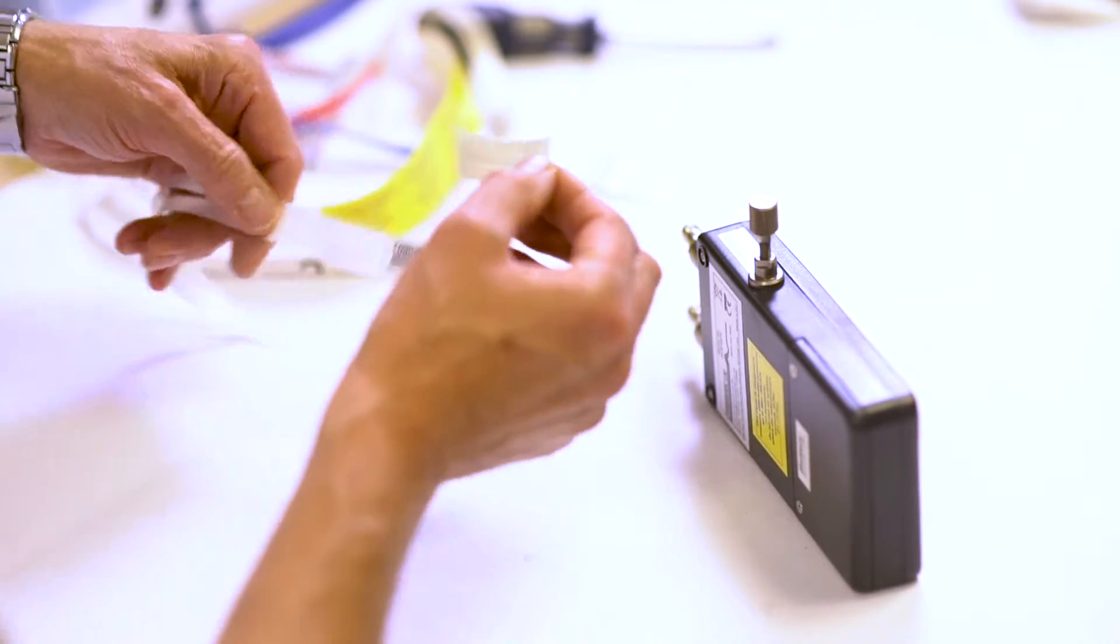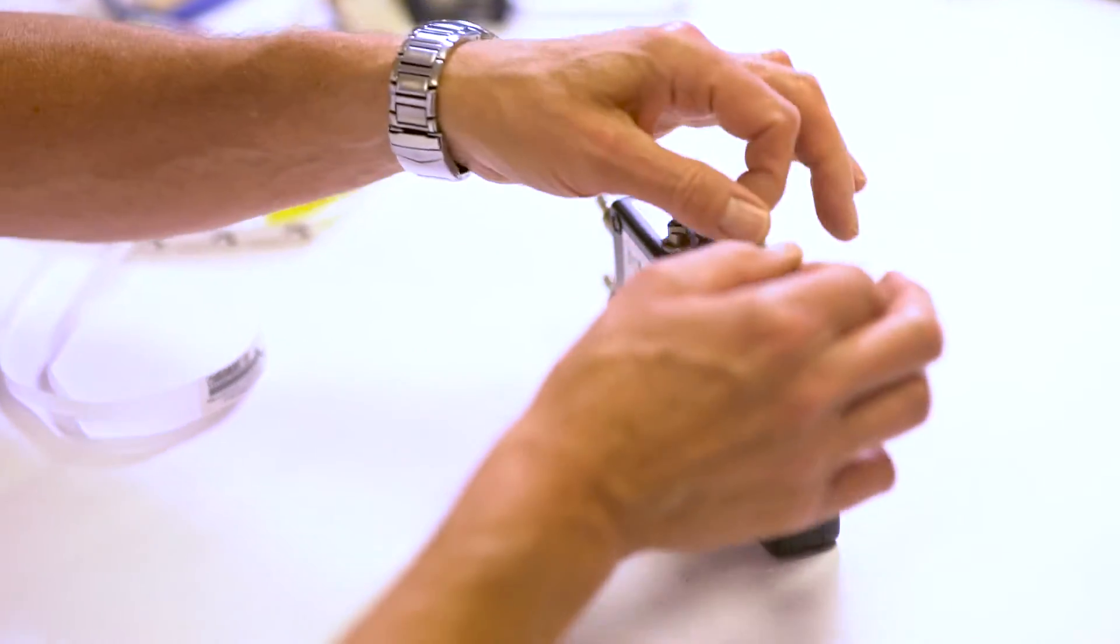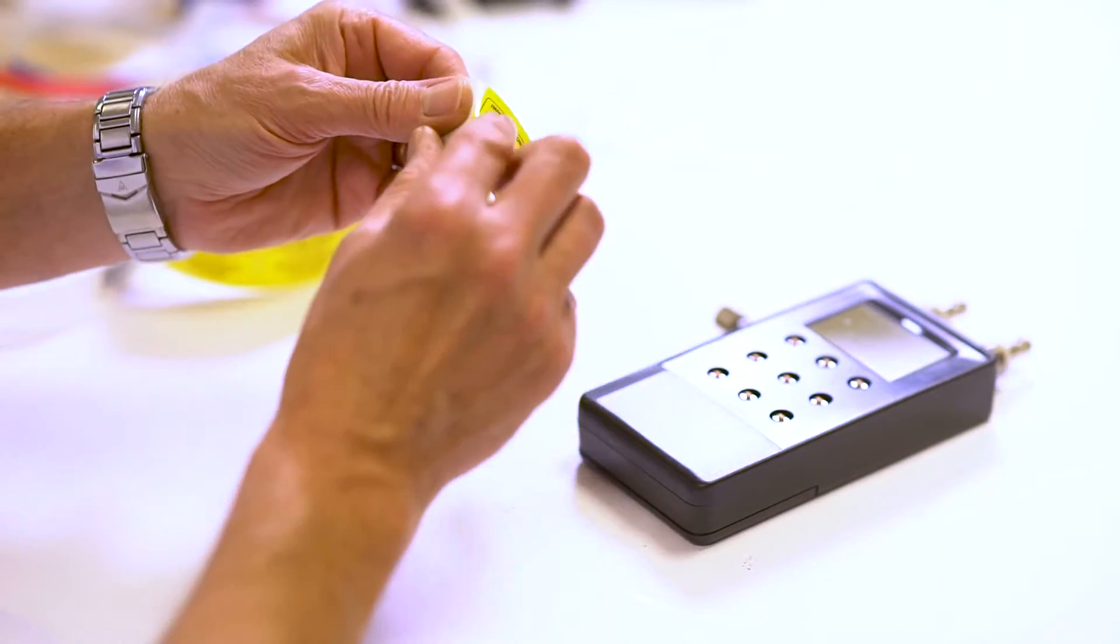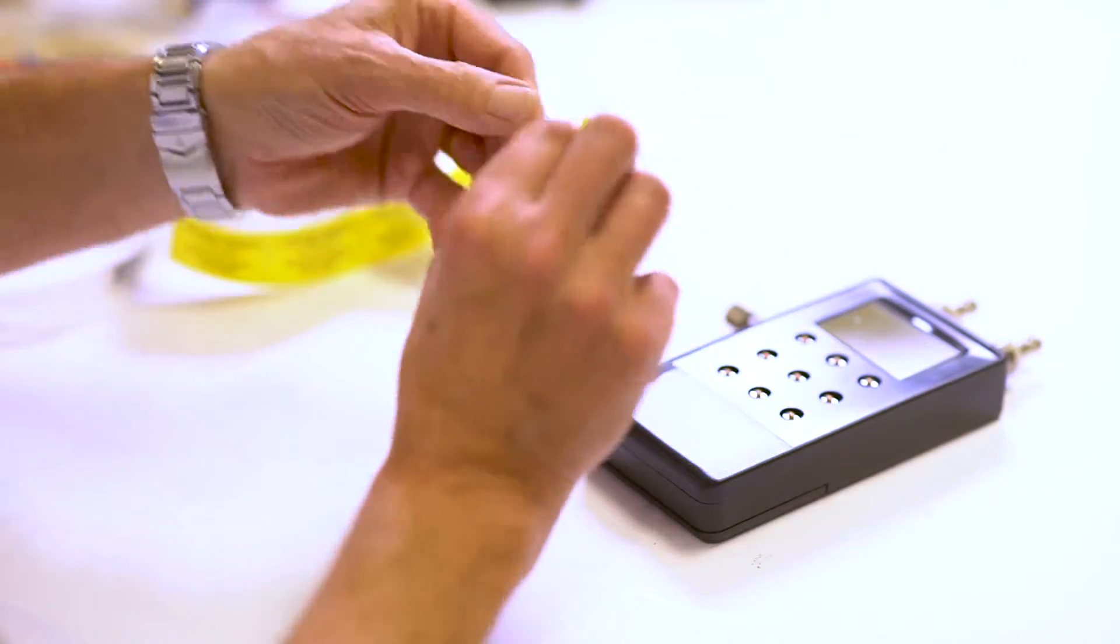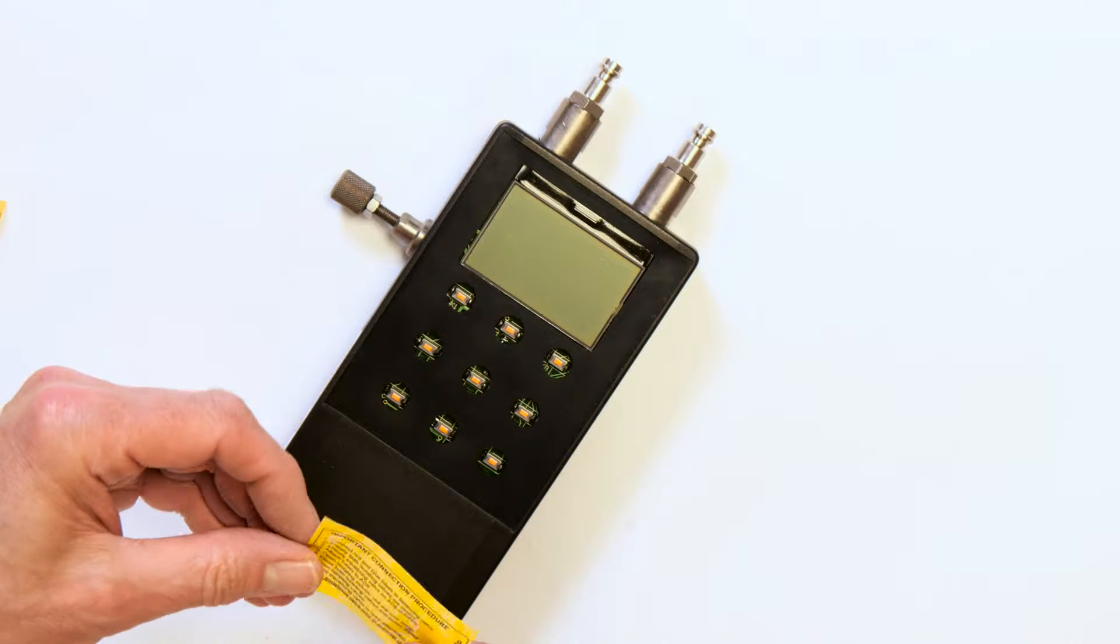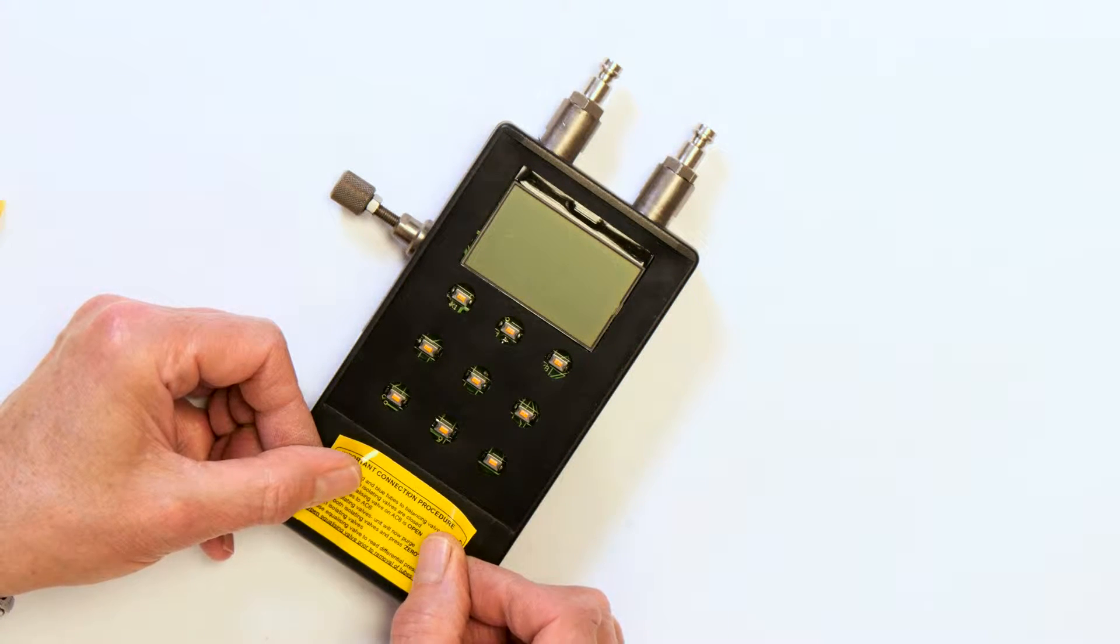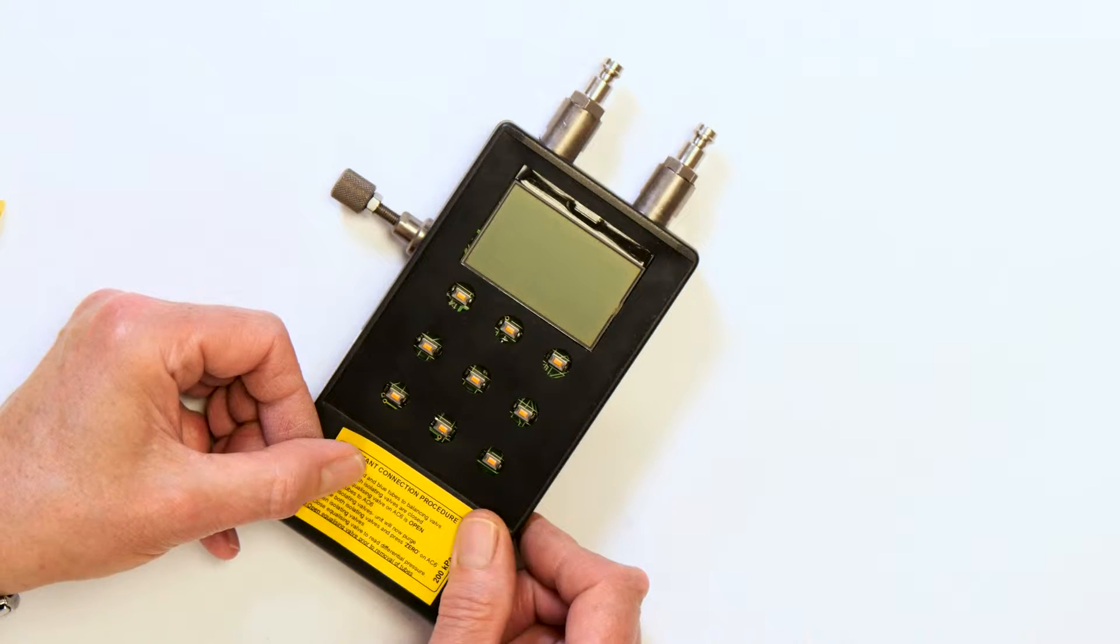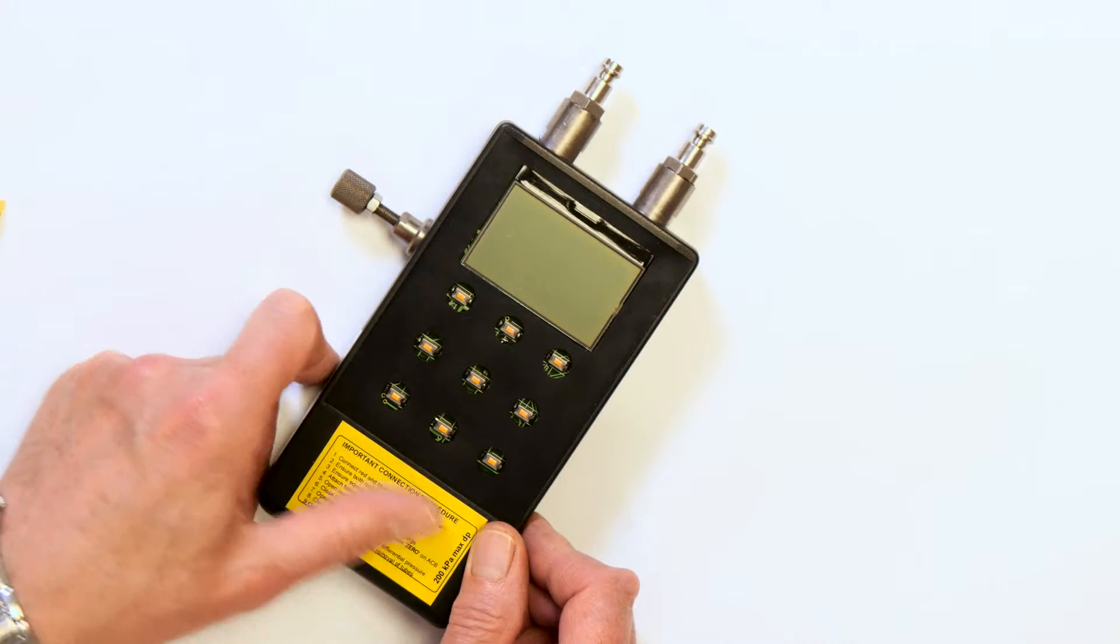We then have a security label. And when you're on site, the quick reference to connection, disconnection is all down on the front of each unit. Simple nine stages of connection and disconnection.